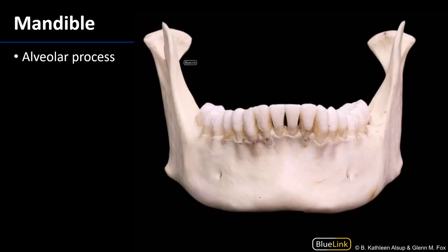Looking at the anterior view of the whole mandible, the chin is in the mental region. This is exceedingly important for anyone with a future in dentistry: this is the alveolar process of the mandible. There is also an alveolar process of the maxilla. These processes are thickenings of bone that surround the sockets of the teeth — the alveolar sockets that hold the roots of the teeth.